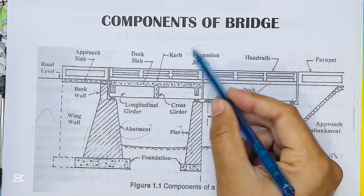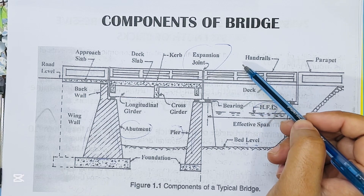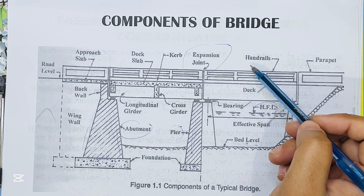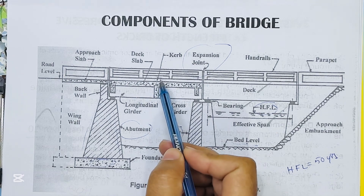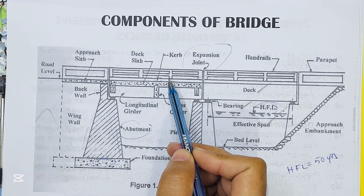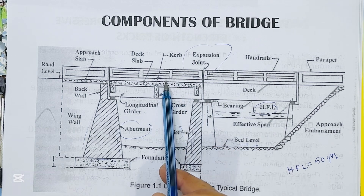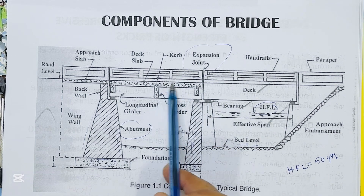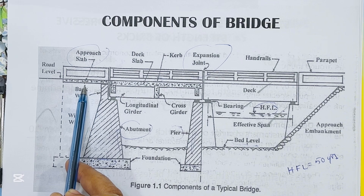Expansion joints allow the concrete to naturally expand and contract without cracking. Curb is the edge where a raised sidewalk or road median meets a street or other roadway. Approach slabs are intended to provide a smooth transition between the roadway and the pavement of the bridge.